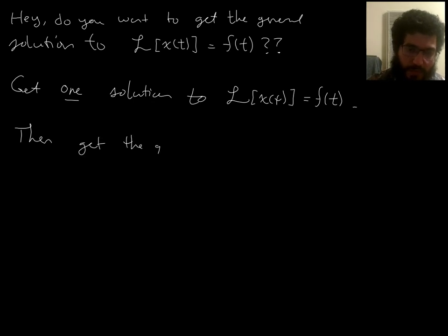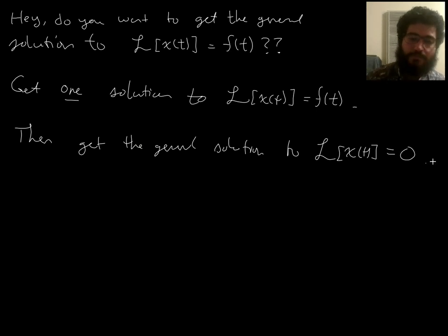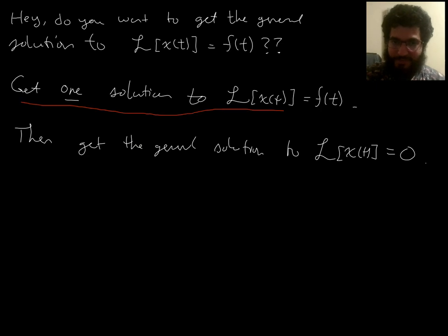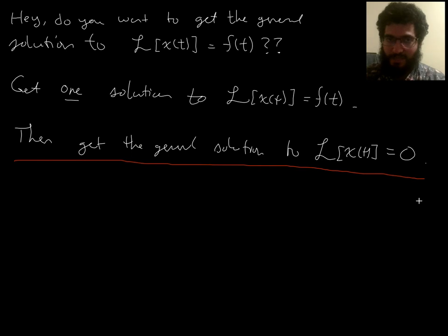Then, get the general solution to the homogeneous version of this. That we know how to do every time. It's guess e to the lambda t, and then you get the three cases. We know how to do that every single time. So really, the hard part of this whole setup is going to be this part, getting the one solution to this. This part is not hard, in the sense that you already learned it, and you have a system that works every time.